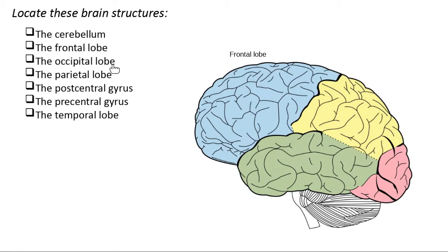If you were struggling to orient yourself, remember that the structure we can use to help us determine front from back is this thing back here. This one down here is actually not a lobe of the brain — it is the cerebellum. The cerebellum is something we'll talk about a little bit today.